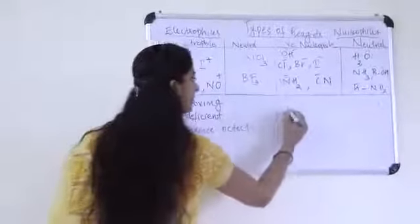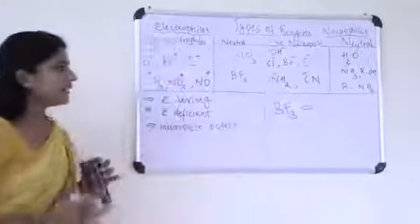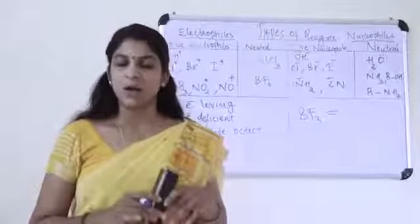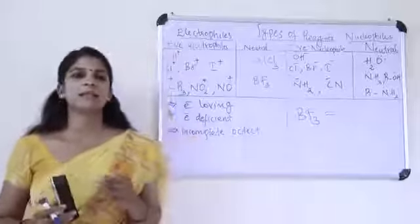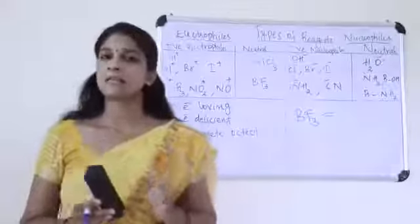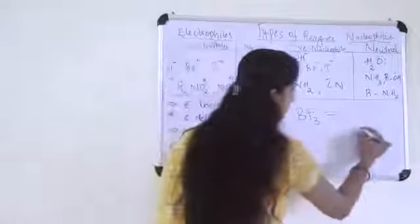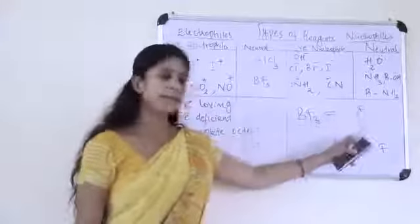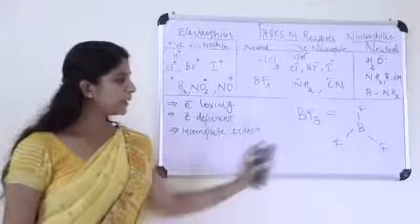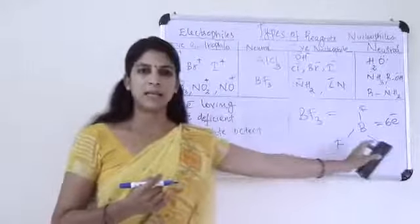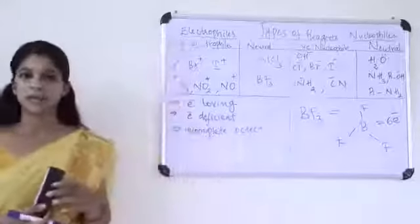Next molecule is BF3. In BF3, boron is bonded to three fluorine atoms. Boron has only 6 electrons around it. So this is also electron deficient in nature, and they have an incomplete octet. So they have a tendency to accept electrons.